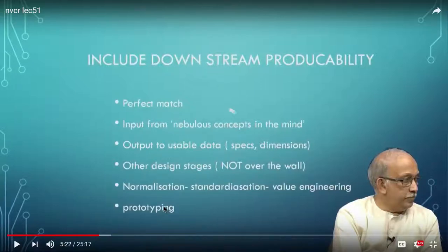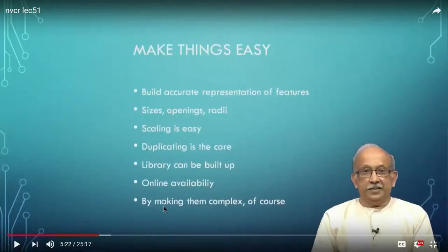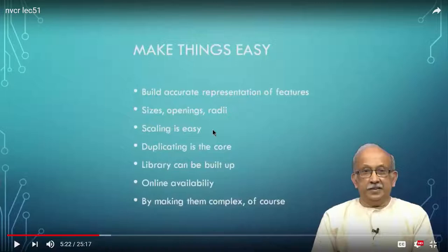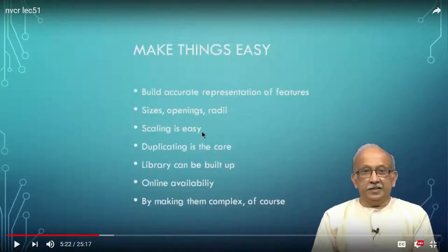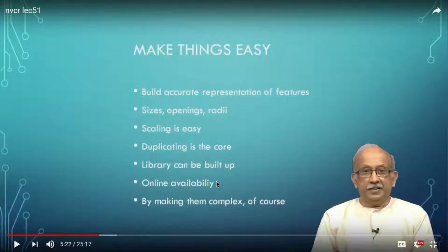Prototyping allows accurate representation of features and sizes. Scaling both in terms of quantities — you can make multiple copies of the same — and scaling of individual entities, you can make them bigger or smaller. Once you make a metric-proportioned fastener, for example, duplicating it is easy. If you make one object you can keep using it and build a library, and the magic is that a lot of these are available online as open source.